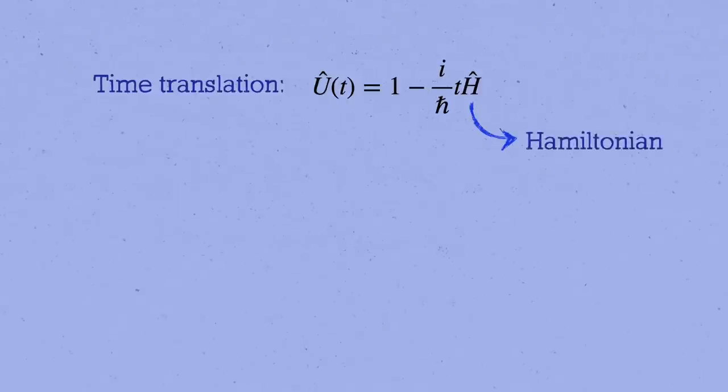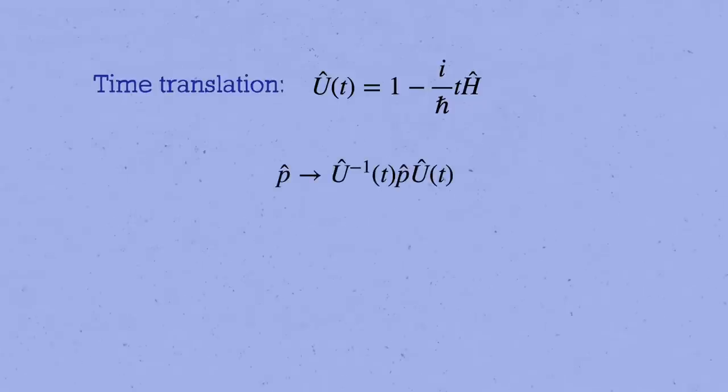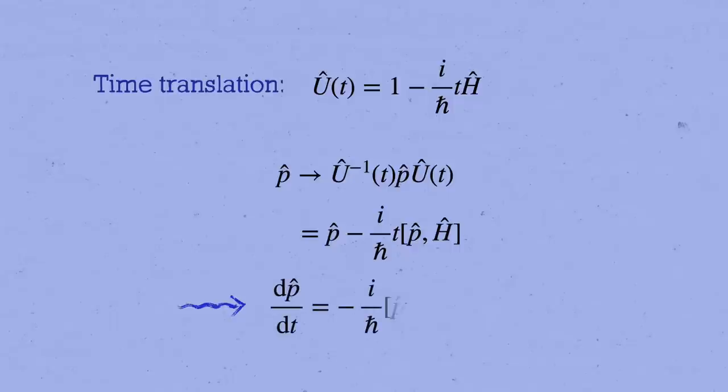I'll finish up by pointing out that all this machinery is very general. For example, time translation symmetry, which we saw is classically generated by the Hamiltonian, is quantum mechanically described by the unitary transformation u equals 1 minus i over h-bar t times h, where t is an infinitesimal time interval and h is the generator, the Hamiltonian operator. Under this transformation, an operator like p transforms into u inverse pu, which for small t you can expand just like we did a moment ago to get p minus i over h-bar t times p bracket h. Thus, if the quantum momentum is to be constant in time, it must commute with the Hamiltonian operator. And this is the quantum statement of translation invariance.